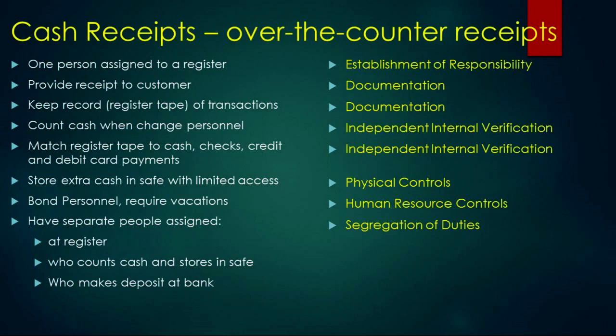Storing extra cash in a safe with limited access — that's physical controls. Bonding the cash register personnel and requiring that they take vacations — that's a human resource control. Having separate people assigned to the register, who counts the cash and stores it in the safe, and who makes the deposit at the bank — the person at the register cannot be the same person who stores the cash and makes the bank deposit. These need to be separate people — that's segregation of duties.